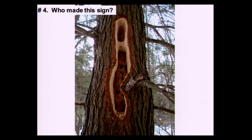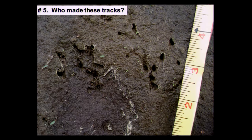Who made this scat? Who made this sign on the side of the tree? This is a big cavity, a big hole on the side of the tree. This one might be a little more difficult to see, but who made these tracks? We've got a set of tracks here, here, here, and over here — that's the whole group of tracks.